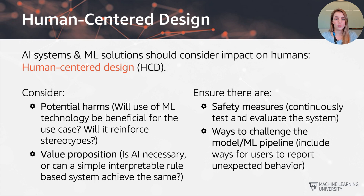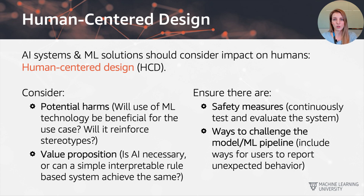We want to ensure that there are safety measures, which means we need to continuously test and evaluate the system, and that there exist ways to challenge the model and the machine learning pipeline itself. We should include ways for users to report unexpected behaviour — if they see results they don't expect, there should be a feedback mechanism in place for them to flag that behaviour and the issues they observe.